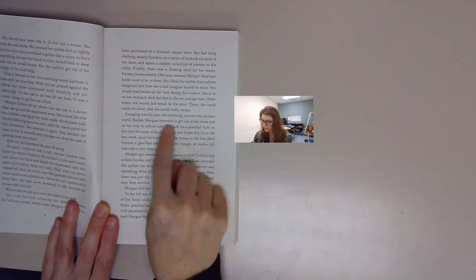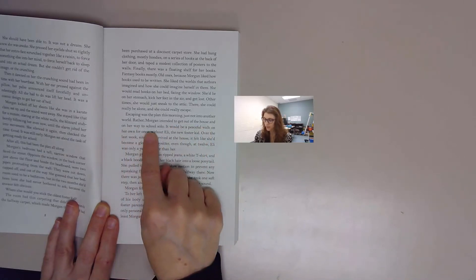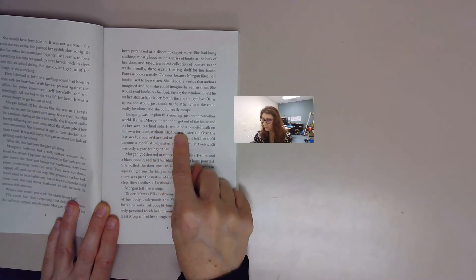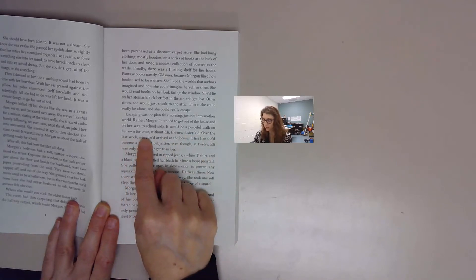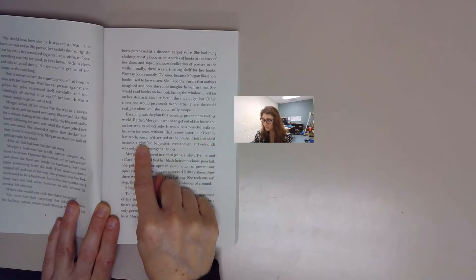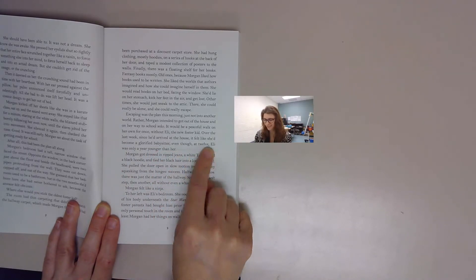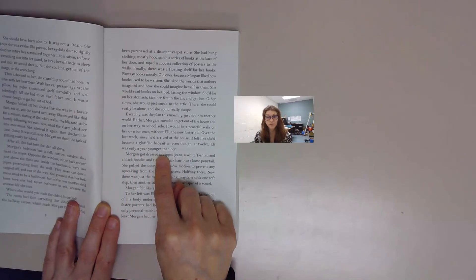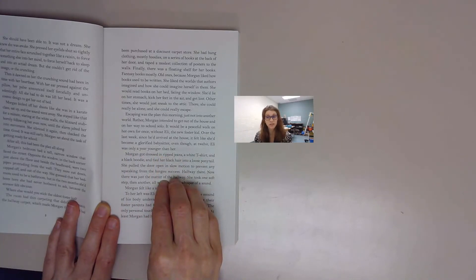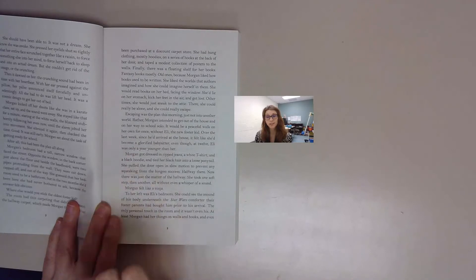Not just into another world. Rather, Morgan intended to get out of the house and on her way to school solo. It would be a peaceful walk on her own for once, without Eli, the new foster kid. Over the last week since he'd arrived at the house, it felt like she'd become a glorified babysitter, even though at 12, Eli was only a year younger than her. So Eli is a new foster kid at this home where Morgan lives, and she's also a foster child. Eli is 12, Morgan is 13.